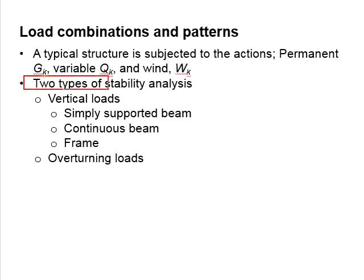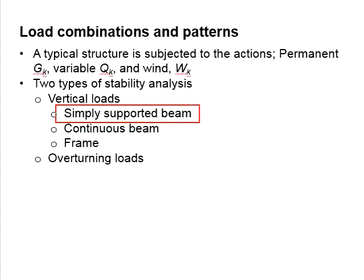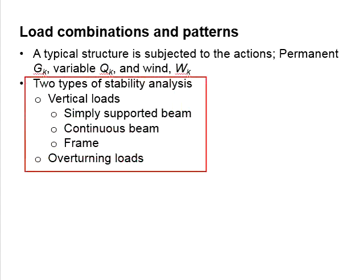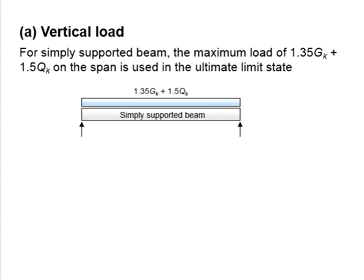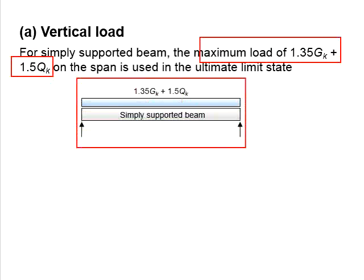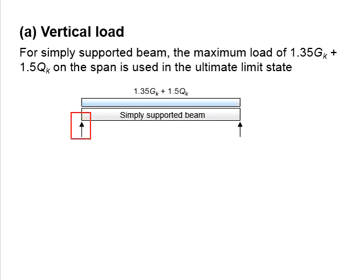Basically, there are two types of stability analysis which involve the vertical load and the overturning load. Within the vertical load, the member can be in the form of a simply supported beam, a continuous beam, or the entire frame. In these chapters, we will cover the analysis of all these kinds. For the vertical load of a simply supported beam, the calculation is straightforward. We apply a maximum load of 1.35 GK and 1.5 QK throughout the span of the member in the ultimate limit state, find the reactions, and then draw the shear force and bending moment diagram.